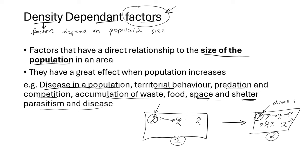These are examples of density dependent factors that cause the population to fluctuate. For example, if a new species tries to build a habitat in a dense population, it cannot because there is no space — and that will cause the population to fluctuate.